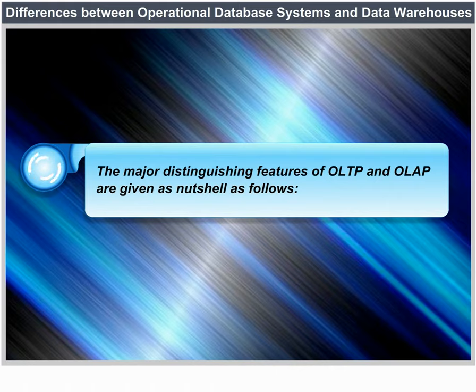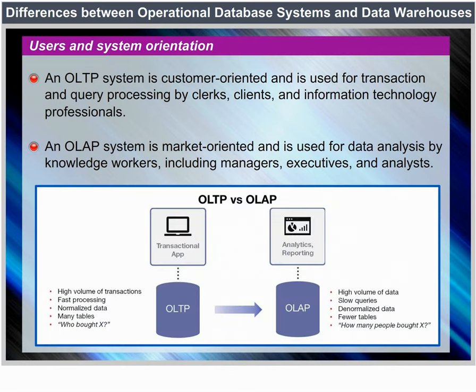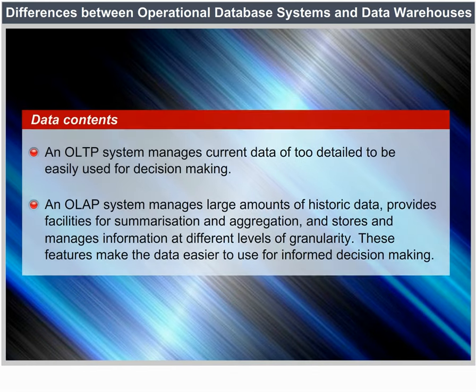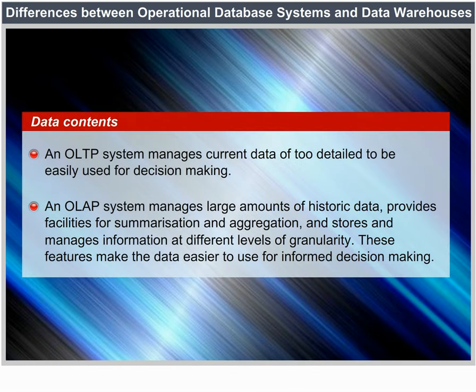Users and System Orientation: An OLTP system is customer-oriented and is used for transaction and query processing by clerks, clients and IT professionals. An OLAP system is market-oriented and is used for data analysis by knowledge workers including managers, executives and analysts. Data contents: An OLTP system manages current data that typically are too detailed to be easily used for decision making. An OLAP system manages large amounts of historic data, provides facilities for summarization and aggregation, and stores information at different levels of granularity — making data easier to use for informed decision making.